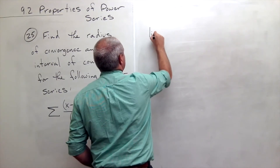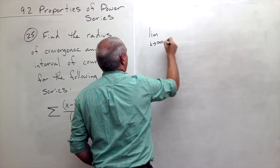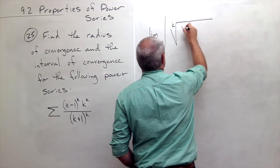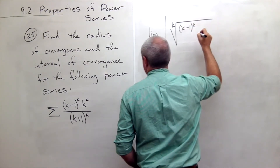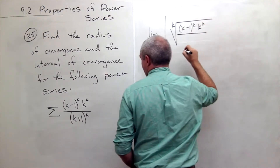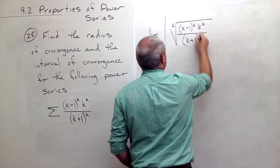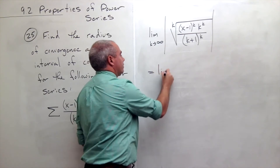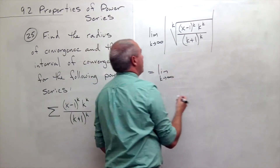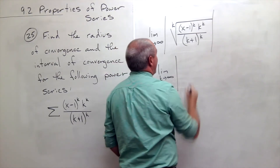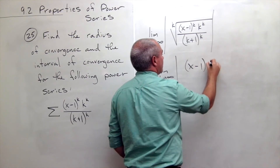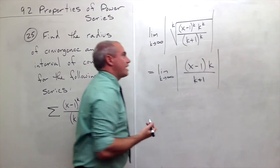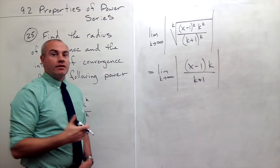What I want to do is look at the limit as k goes to infinity of — still needing absolute value — of the kth root of x minus 1 to the k, times k to the k, divided by k plus 1 to the k. Taking the kth root of all these things raised to the k, I get the limit as k goes to infinity of the absolute value of x minus 1 times k divided by k plus 1. All of those kth powers just fall off when I take the kth root.